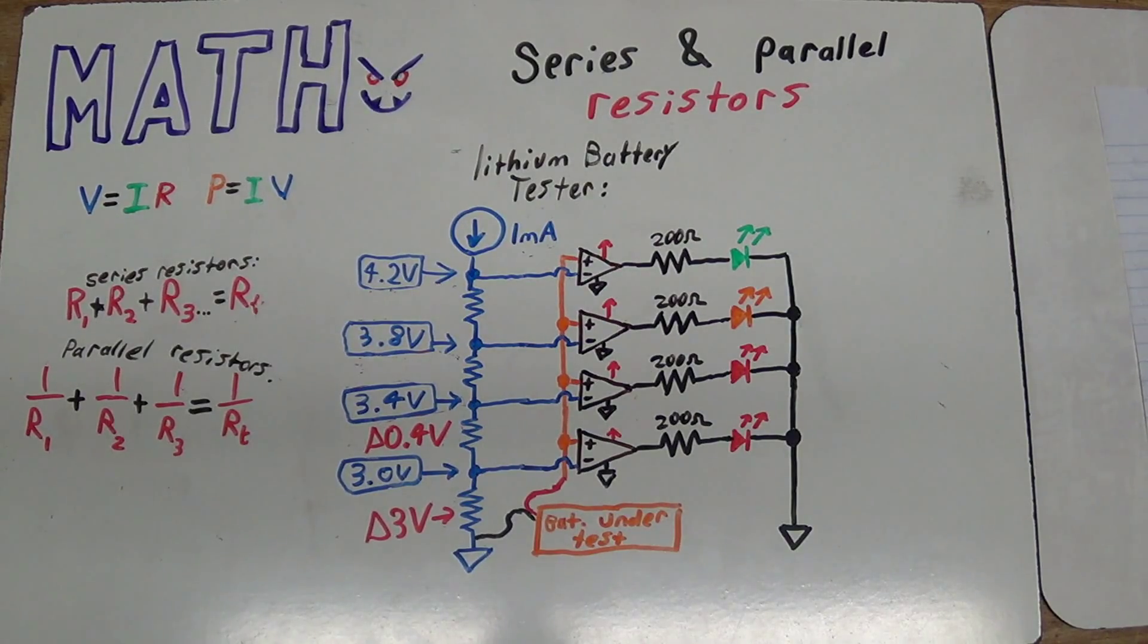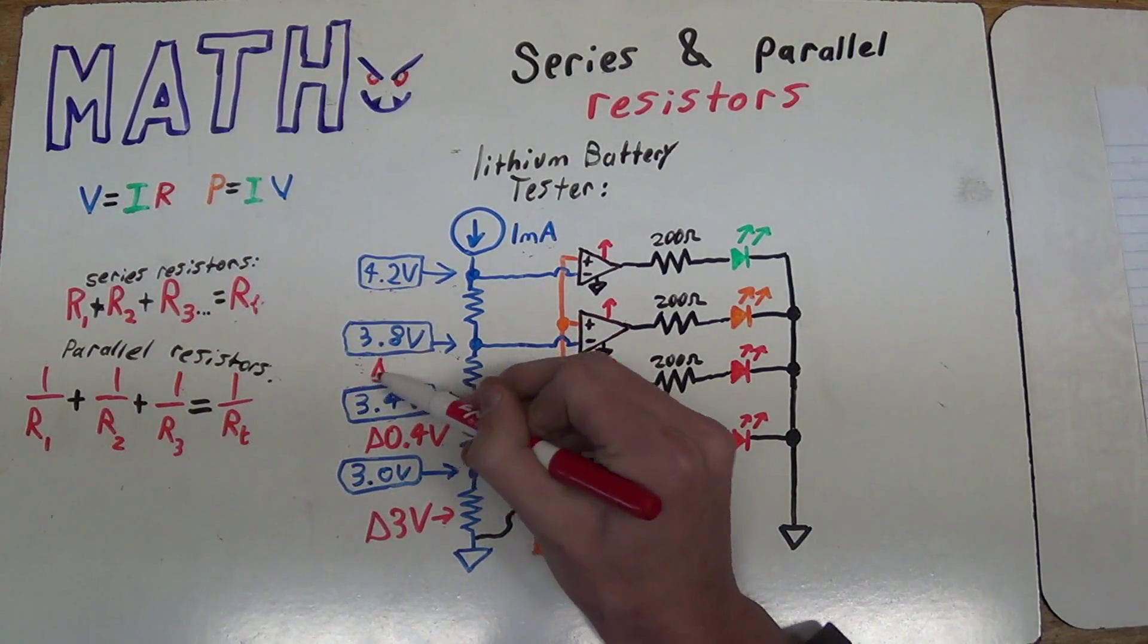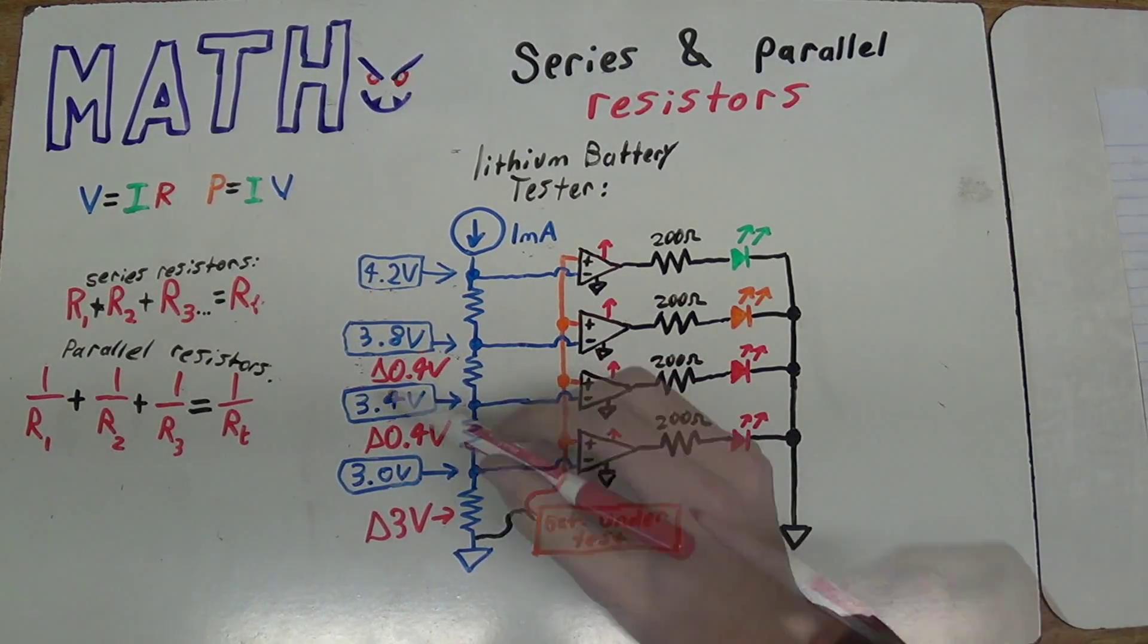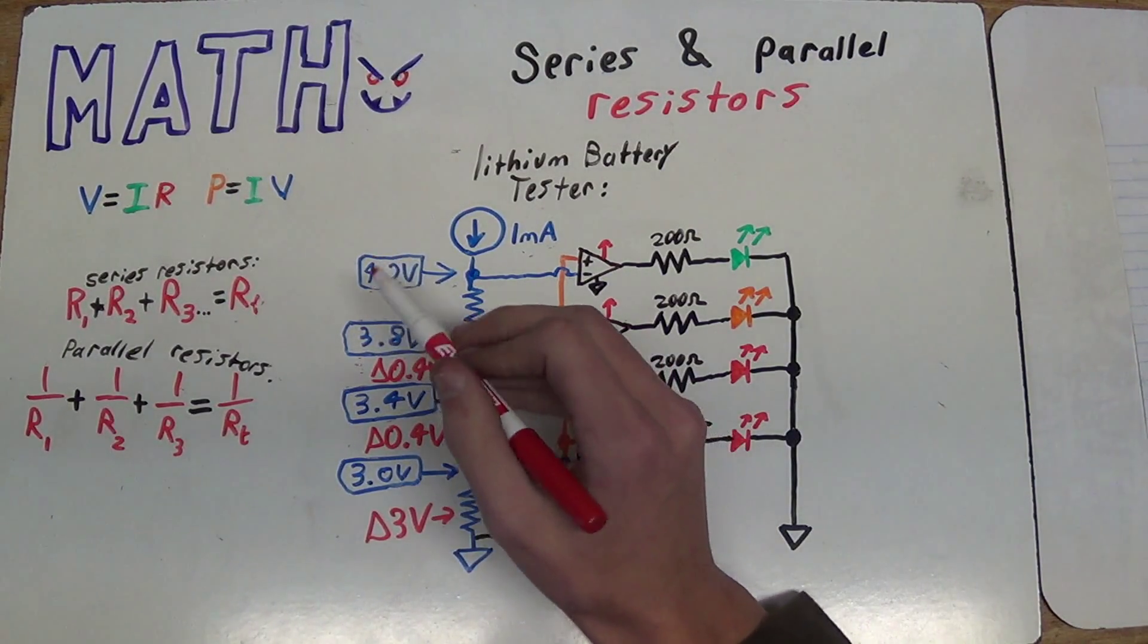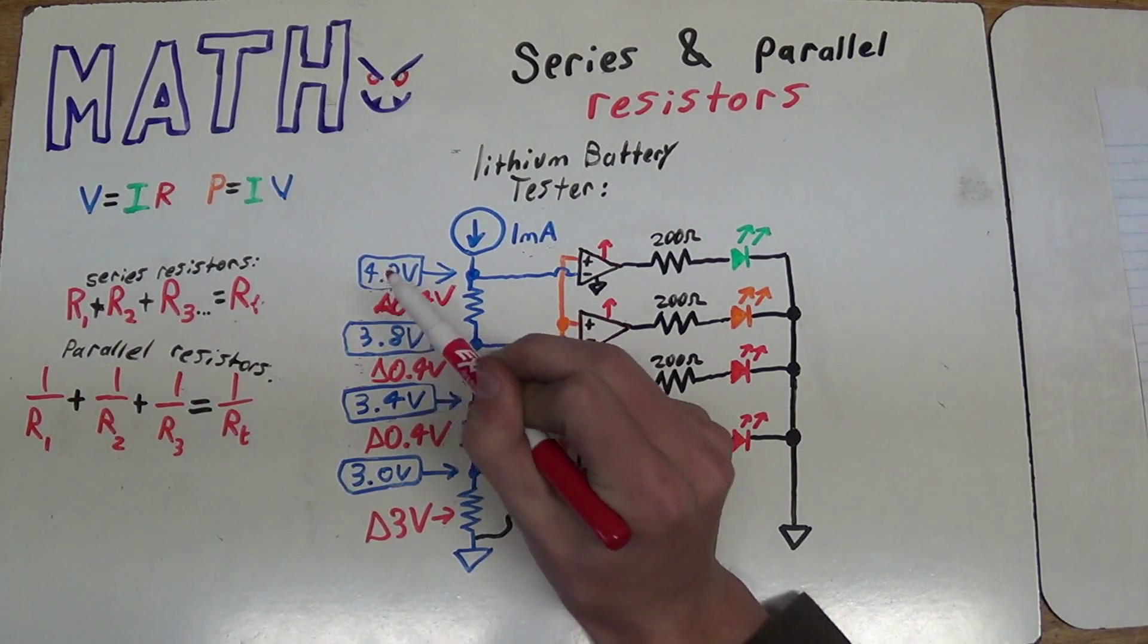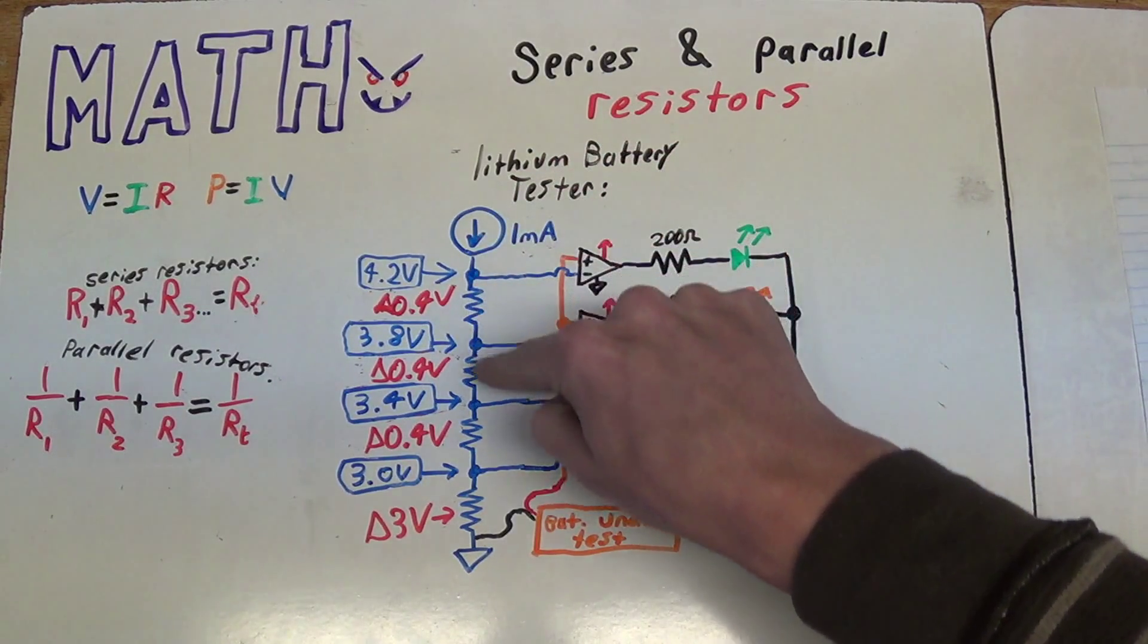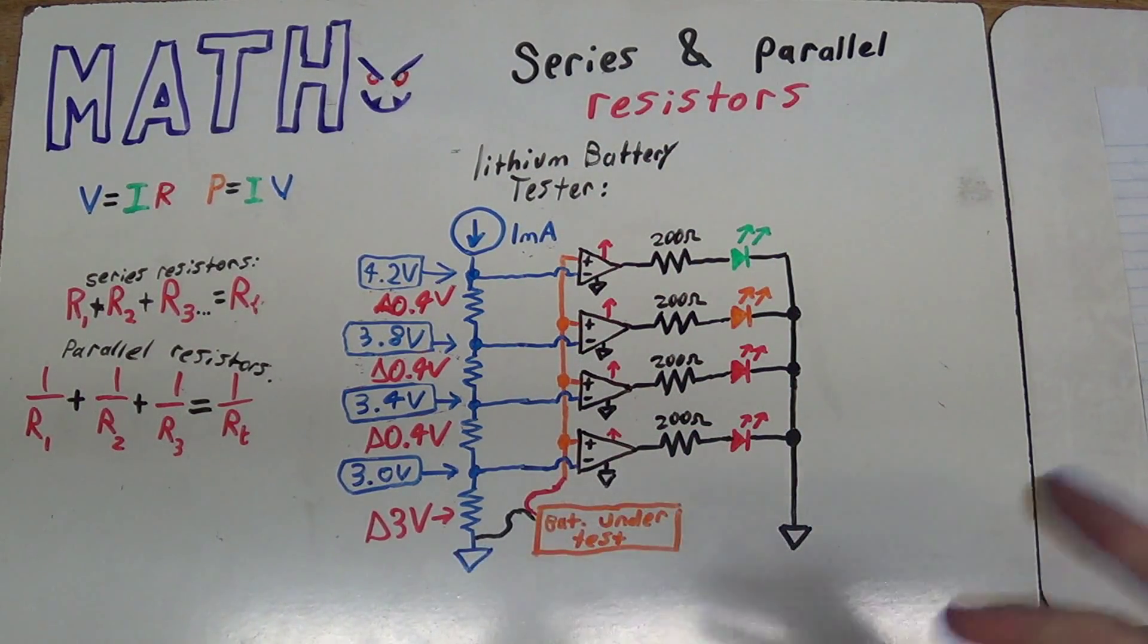And of course we'll do the same thing for here. Here the difference between 3.8 and 3.4 is again 0.4 volts. And the same thing up here. The difference between 3.8 and 4.2 is also 0.4. So now that we know what the voltage drop across these resistors are, and what current is flowing through all of the resistors, it becomes very easy to calculate what resistors we need using Ohm's law.